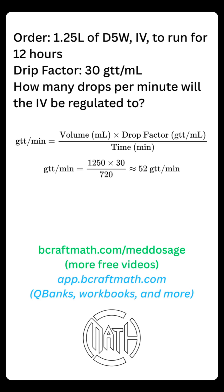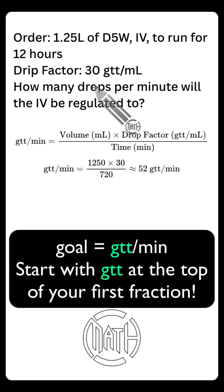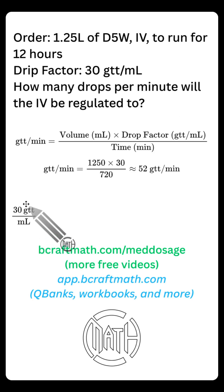So dimensional analysis, I like to start with my goal. Our goal is how many drops per minute. So drops is the first word we want to focus on here. And notice we do have 30 drops per milliliter. That's how I'm getting this first fraction. Our goal is drops per minute. I'm starting off with drops at the top of my first fraction, and we do have the drop factor, 30 drops per milliliter.